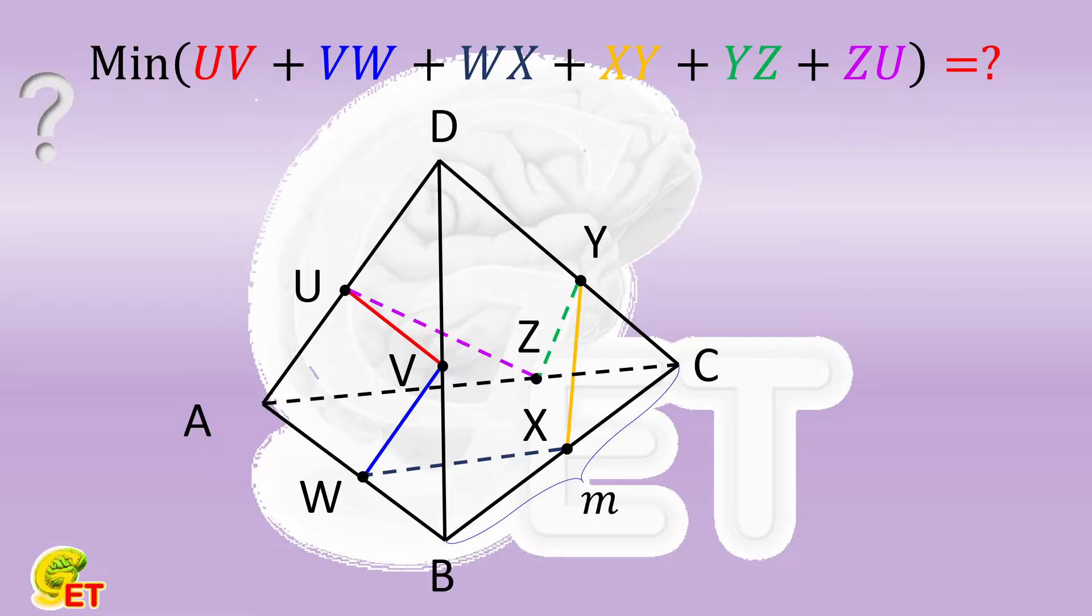Compared with the question we discussed last Friday, although this one seems a little bit more complicated, the idea of solving it is actually very similar. If we insist on announcing that there is any difference, it is that in addition to plotting symmetric figures, we first have to unfold this three-dimensional structure onto the same 2D plane.